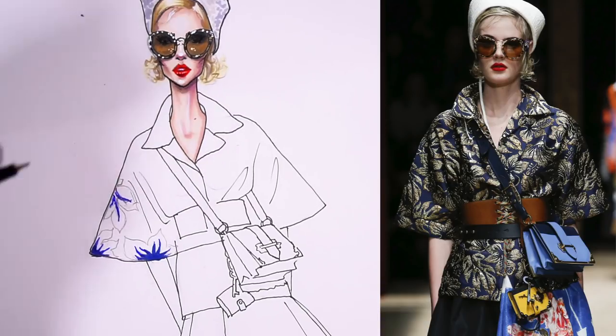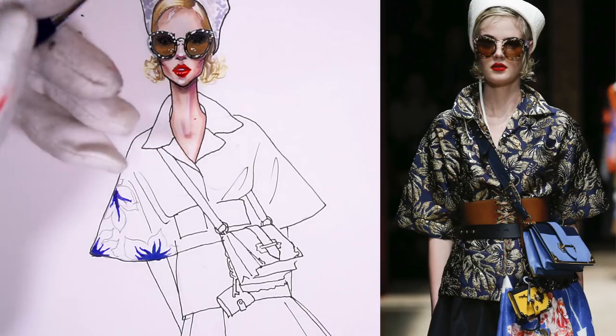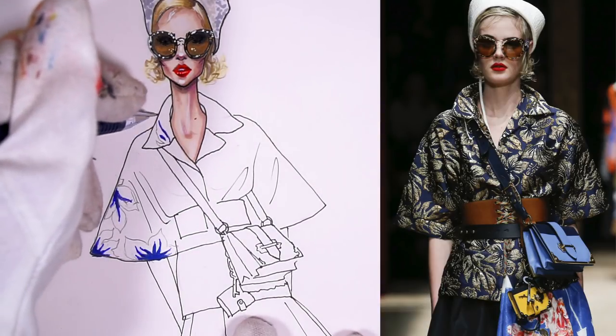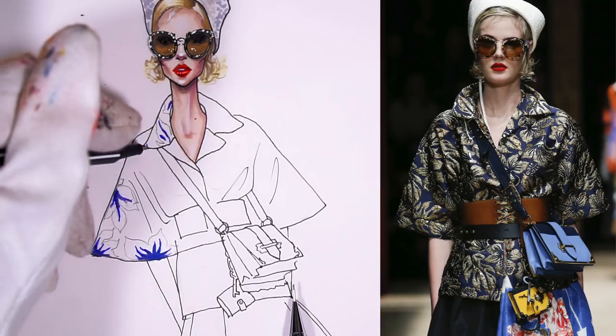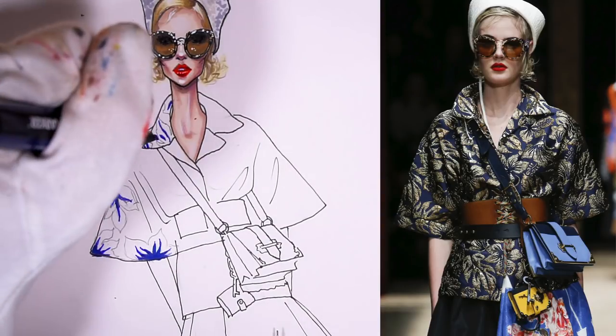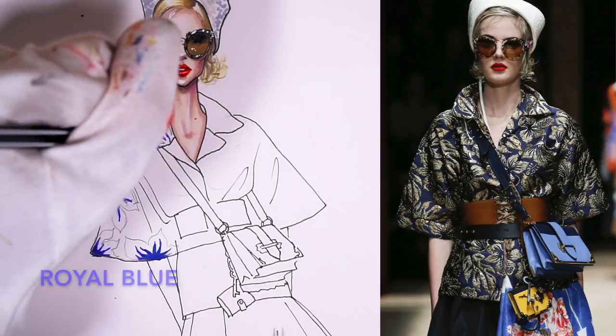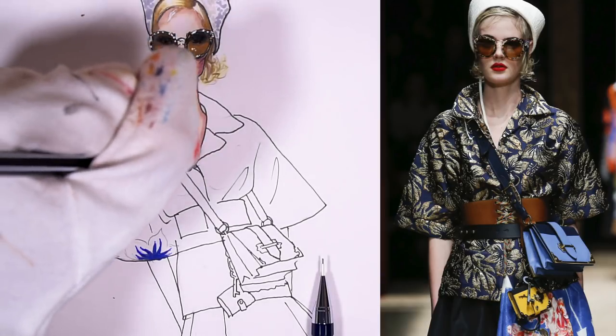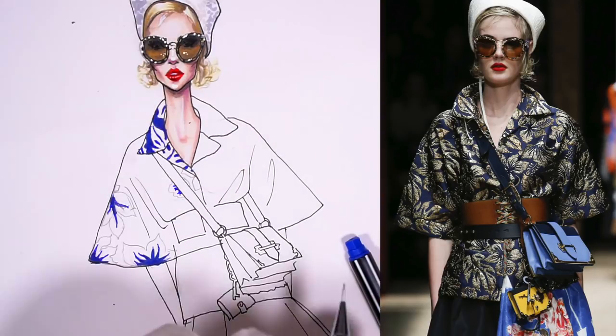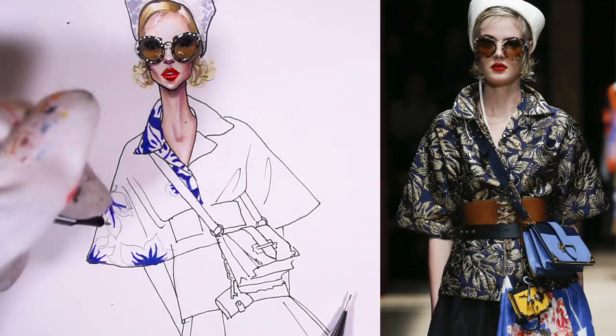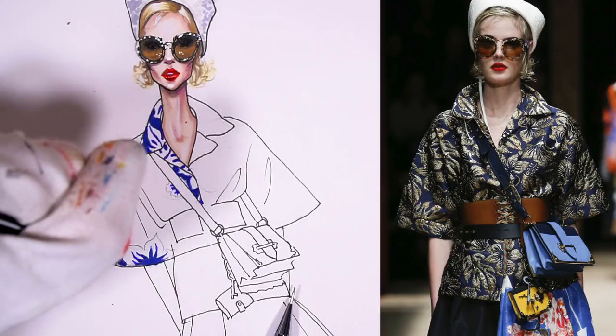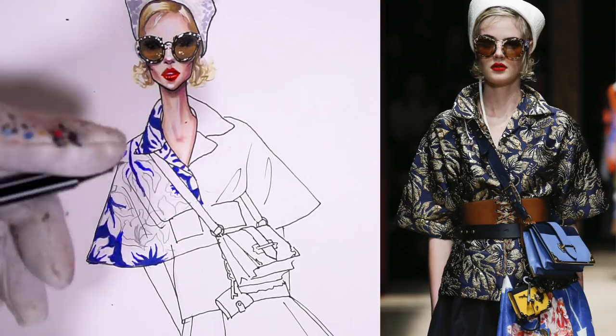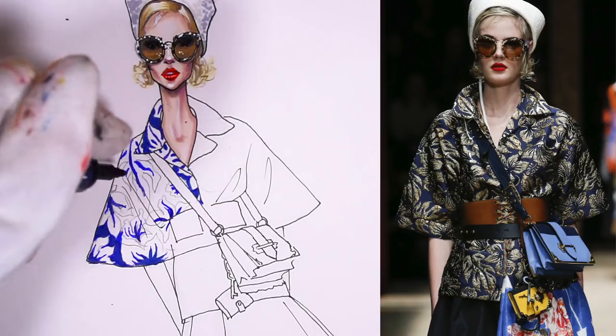For example, here for the thinner details I'm using fineliner, and for the wider parts I'm using marker. Because marker has really thick nib, and for this small pattern it's impossible to go that thin.